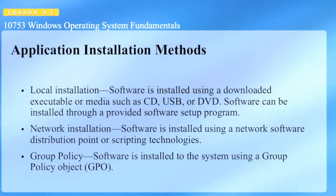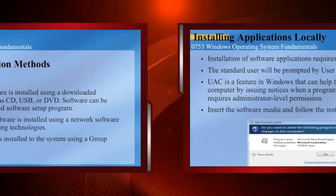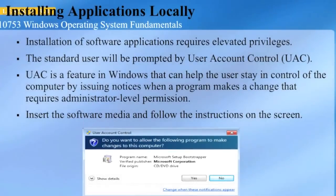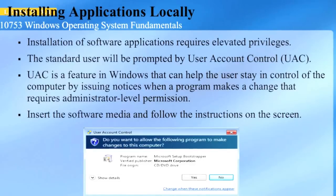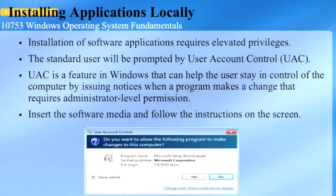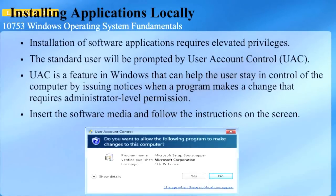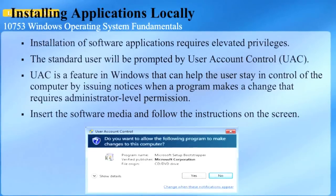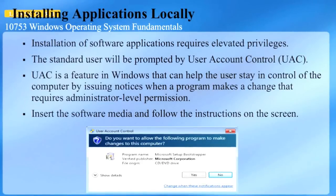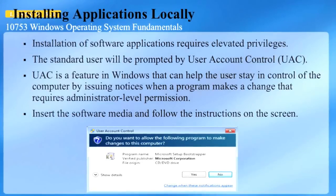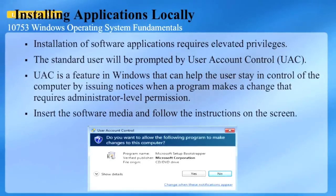Another method is group policy, where software is installed to the system using a Group Policy Object, or GPO. Installation of software applications requires elevated privileges. The standard user will be prompted by User Account Control, known as UAC. UAC is a feature in Windows that helps the user stay in control of the computer by issuing notices when a program makes a change that requires administrator-level permission.